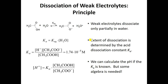What makes something a weak acid versus a strong acid? A strong acid completely dissociates and has a very high acid dissociation constant Ka. For a weak acid like acetic acid, the acid dissociation constant shows us concentration of products over concentration of reactants. The more dissociation — the more the equilibrium is pushed to the right — the higher the Ka and the stronger the acid.